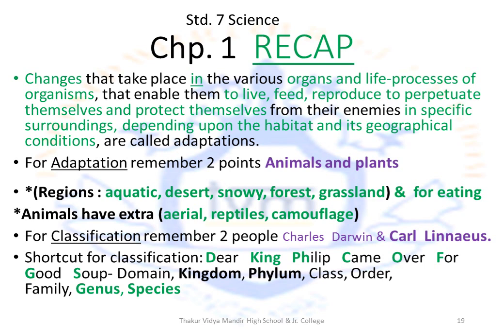As you don't find plants in the air or cold-blooded plants, animals have extra adaptations — aerial and reptile adaptations. Animals also have the ability to camouflage — to blend in with their surroundings to protect themselves from predators, and this ability also helps them hunt prey. To protect themselves from predators, plants can be bitter, poisonous, have a repulsive odor, hard shells or thorns. Moving on to classifications — remember two people: Charles Darwin and Carl Linnaeus, who have contributed heavily in classification.